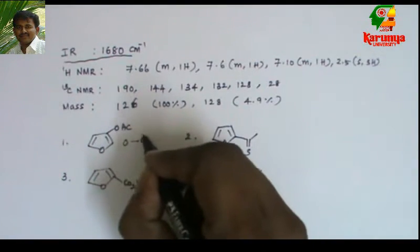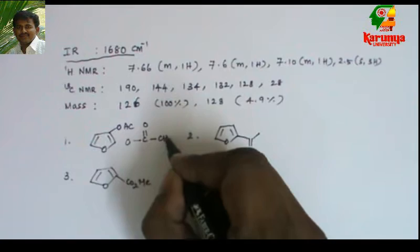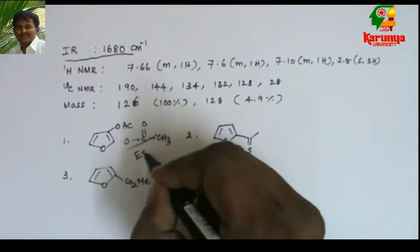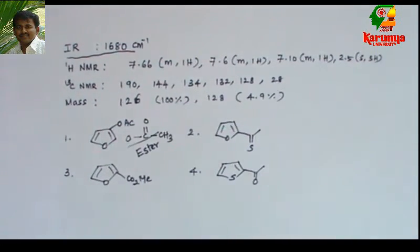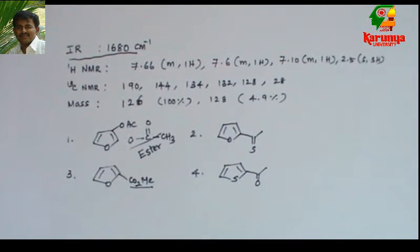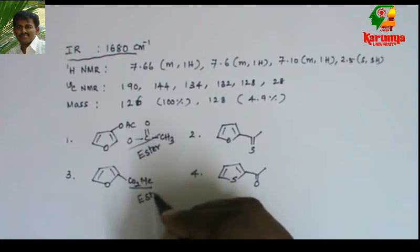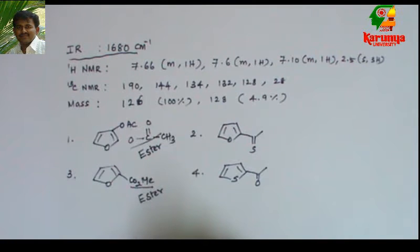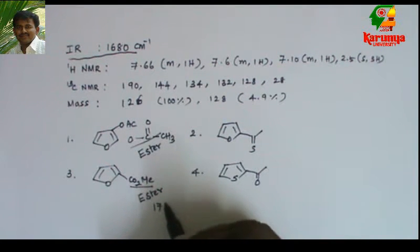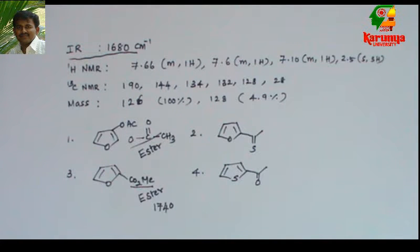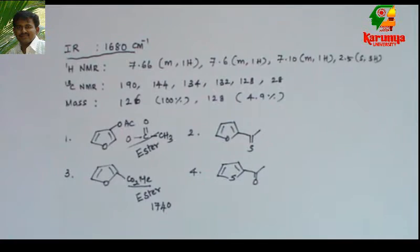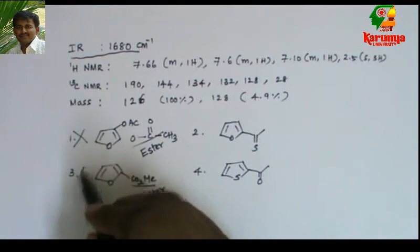The first option is acetate, so the functional group would be ester. For ester, the IR absorption frequency will be around 1740 to 1750, possibly plus or minus 10. But the given value is 1680, which means it is not ester.